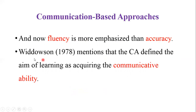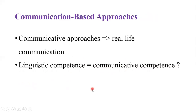Widdowson, 1978, mentioned that the communicative approach defines the aim of learning as acquiring the communicative ability. So communicative ability was the aim of the CA. Communicative approaches focus on real-life communication. In a very strong communicative version, it is solely focused on real communication — real situation communication, what you call authentic.